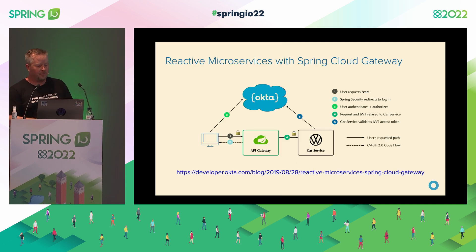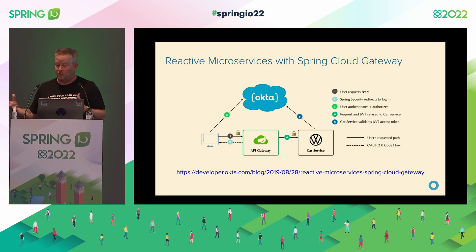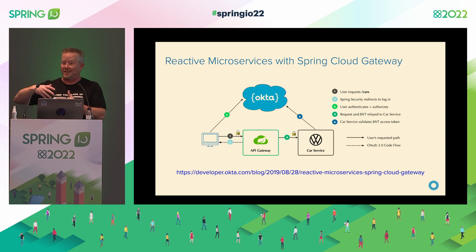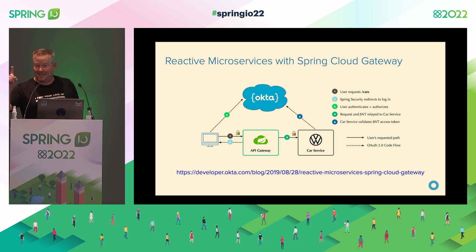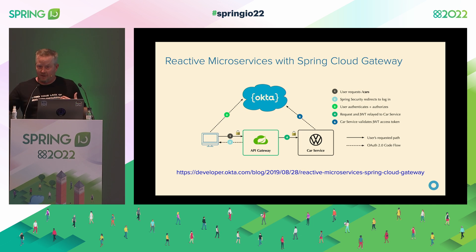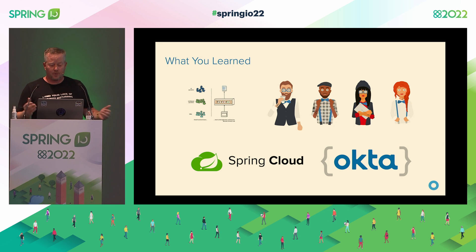I published a blog post on reactive microservices with Spring Cloud Gateway — the first time I used Spring Cloud Gateway. I really like it because for forwarding that JWT from the gateway to downstream microservices, it's like five lines of YAML. You just say use the TokenRelayFilter and it forwards your tokens down to the downstream services. So we covered JHipster, Spring Cloud, microservices, and Okta today.